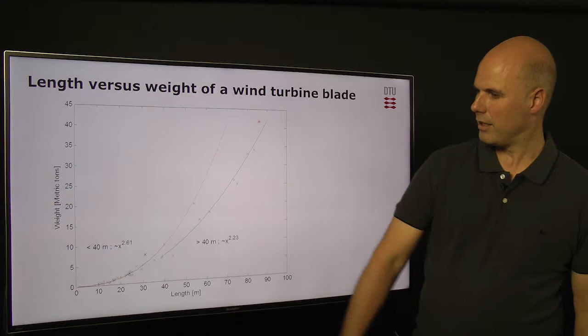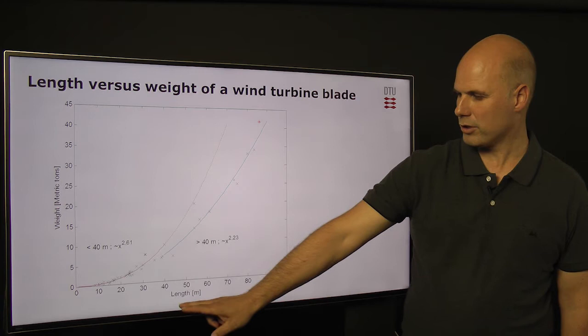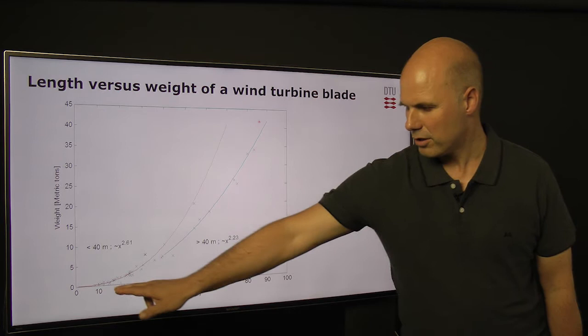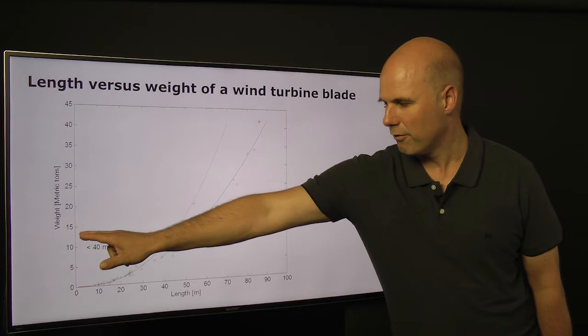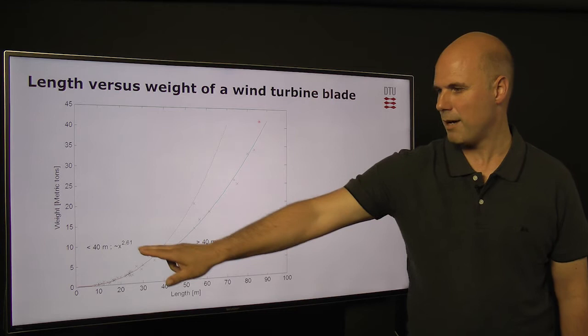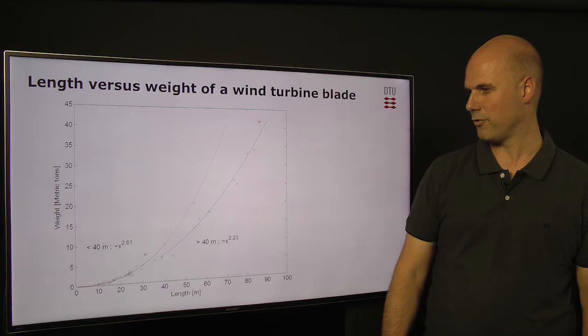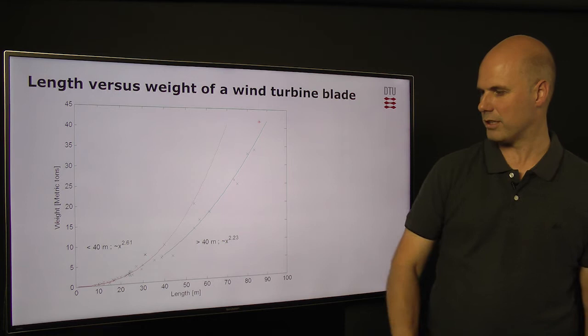Here I have shown a number of existing wind turbine blades plotted as a function of length versus the weight of the blades. If you look at the smallest blades, we can see that the growth in weight versus length is following nearly a power of three. A power of three would be the case for pure upscaling of the blade. If you look at the longer blades, then we have actually a gross weight which is a little lower.